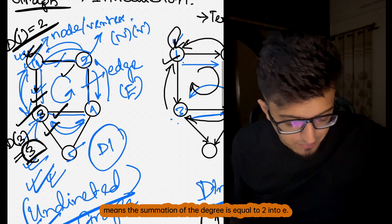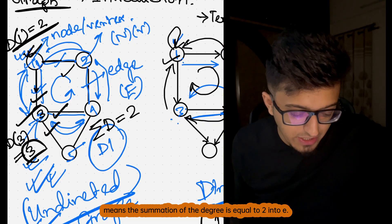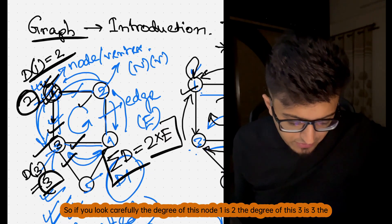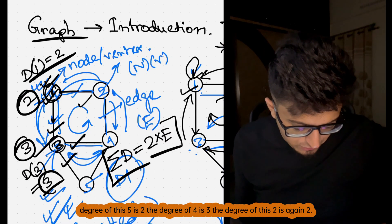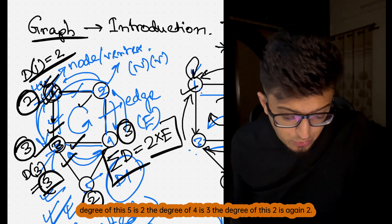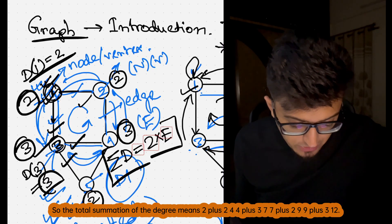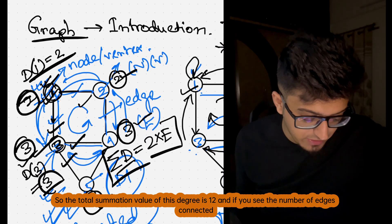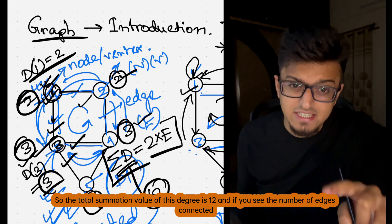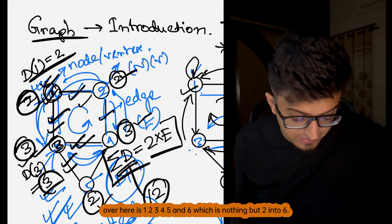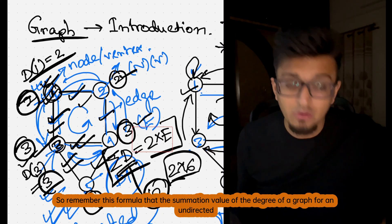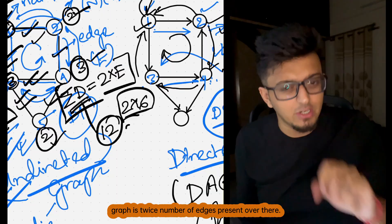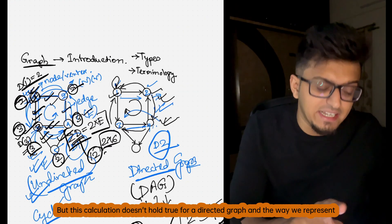Let's verify this formula. The degree of node one is two, node three is three, node five is two, node four is three, and node two is two. The total summation: 2+3+2+3+2 = 12. The number of edges is six, and two into six is indeed twelve — so the formula holds. Remember: the summation of degrees for an undirected graph equals twice the number of edges. However, this calculation doesn't hold true for a directed graph.